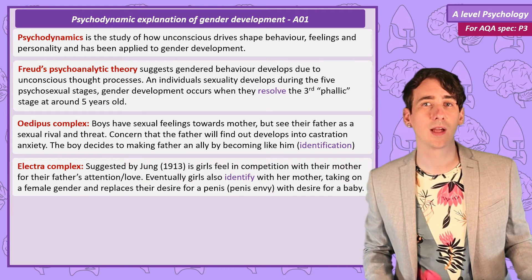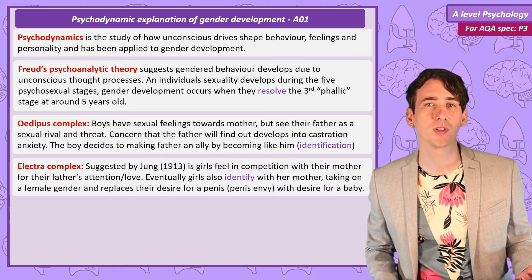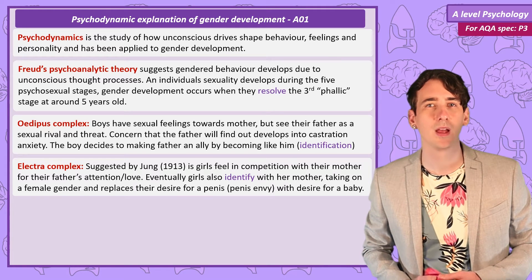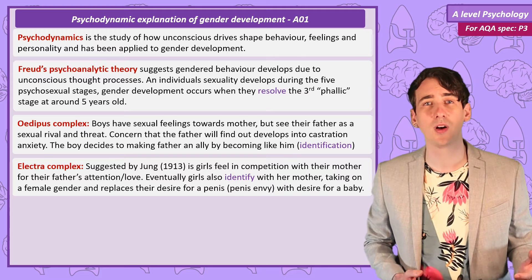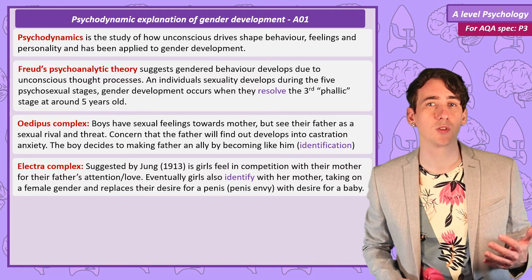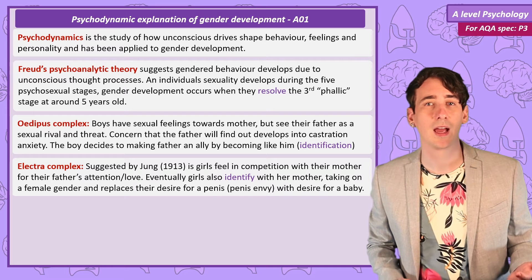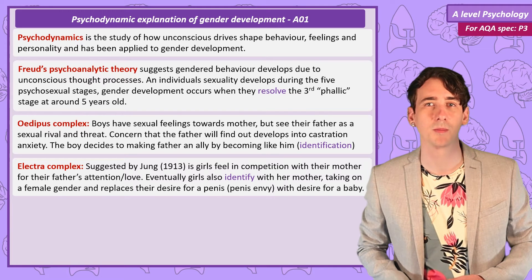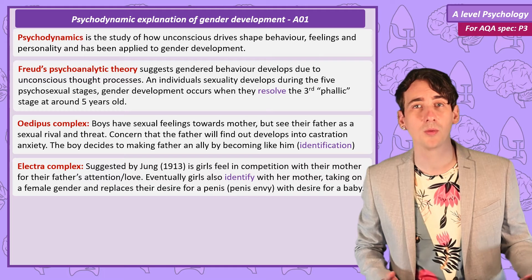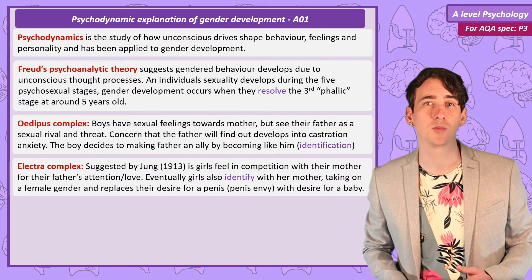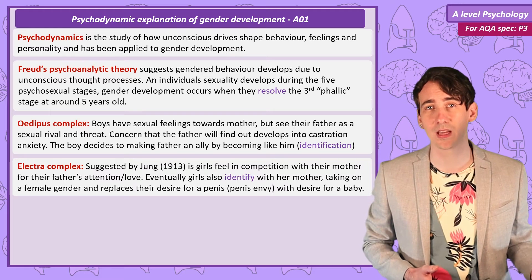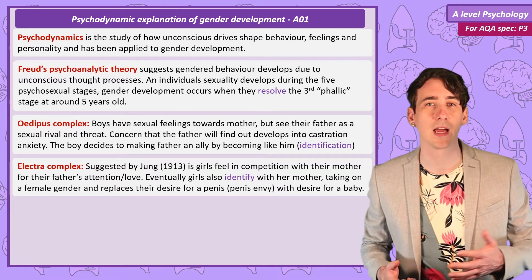According to another psychoanalyst Jung, a similar process happens with girls called the Electra complex. The girl competes with the mother for the father's love. They resent the mother, thinking that she is responsible for the loss of her penis — a concept called penis envy. But eventually the girl realises she can't compete with the mother, identifies with her, and develops feminine behaviour, replacing her penis envy with the desire for a baby.